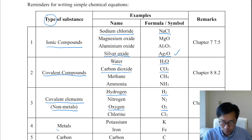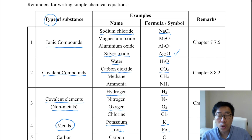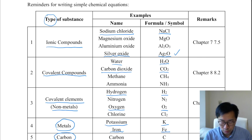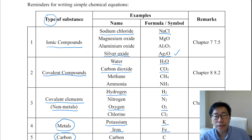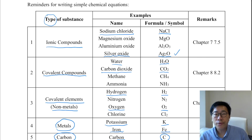For metals, you just write the chemical symbols. So, K for potassium, Fe for iron, and so on. And finally, sometimes you may come across carbon — then you simply write C for carbon.